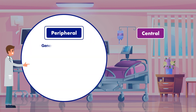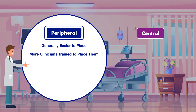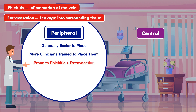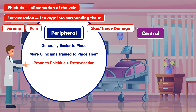Peripheral catheters are generally easier to place, and because of this, more clinicians are trained to place them — including all doctors, physician assistants, and registered nurses. This is helpful because if parenteral nutrition will be administered, the IV can usually be inserted quickly and the infusion can start shortly afterward. Nevertheless, these catheters do raise a few concerns. They are prone to causing both phlebitis and extravasation of a parenteral nutrition solution, which can produce a burning sensation and pain, and with extravasation, there is potential for skin and tissue damage.